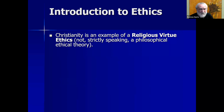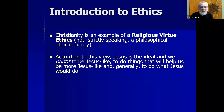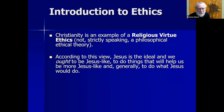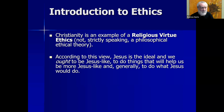Christianity is an example of a religious virtue ethics, not strictly a philosophical ethical theory. According to this view, Jesus is the ideal, and we ought to be Jesus-like, doing the things that would help us be more Jesus-like. There was a set of various artifacts produced — backpacks, bracelets, cups — with the letters WWJD, standing for 'What Would Jesus Do?' The idea is that if Jesus is the hero, you use that as a guiding principle, choosing actions that emulate the model, the hero.